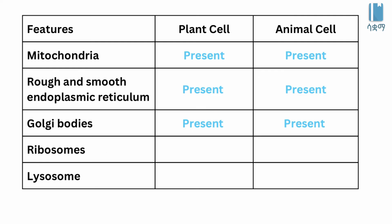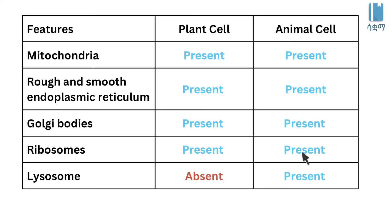Ribosomes: present in both plant and animal cells. Lysosomes: absent in plant cells, but present in animal cells.